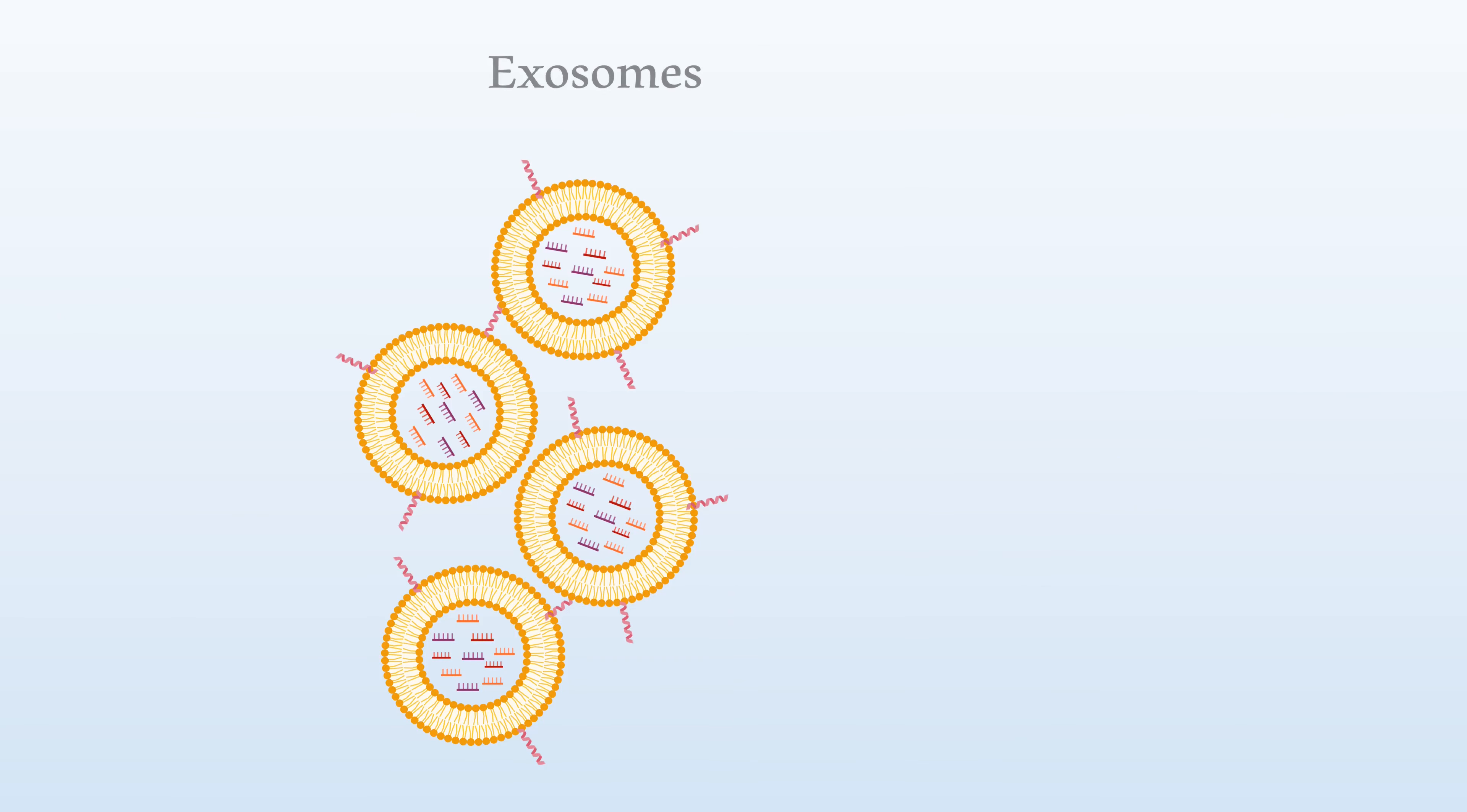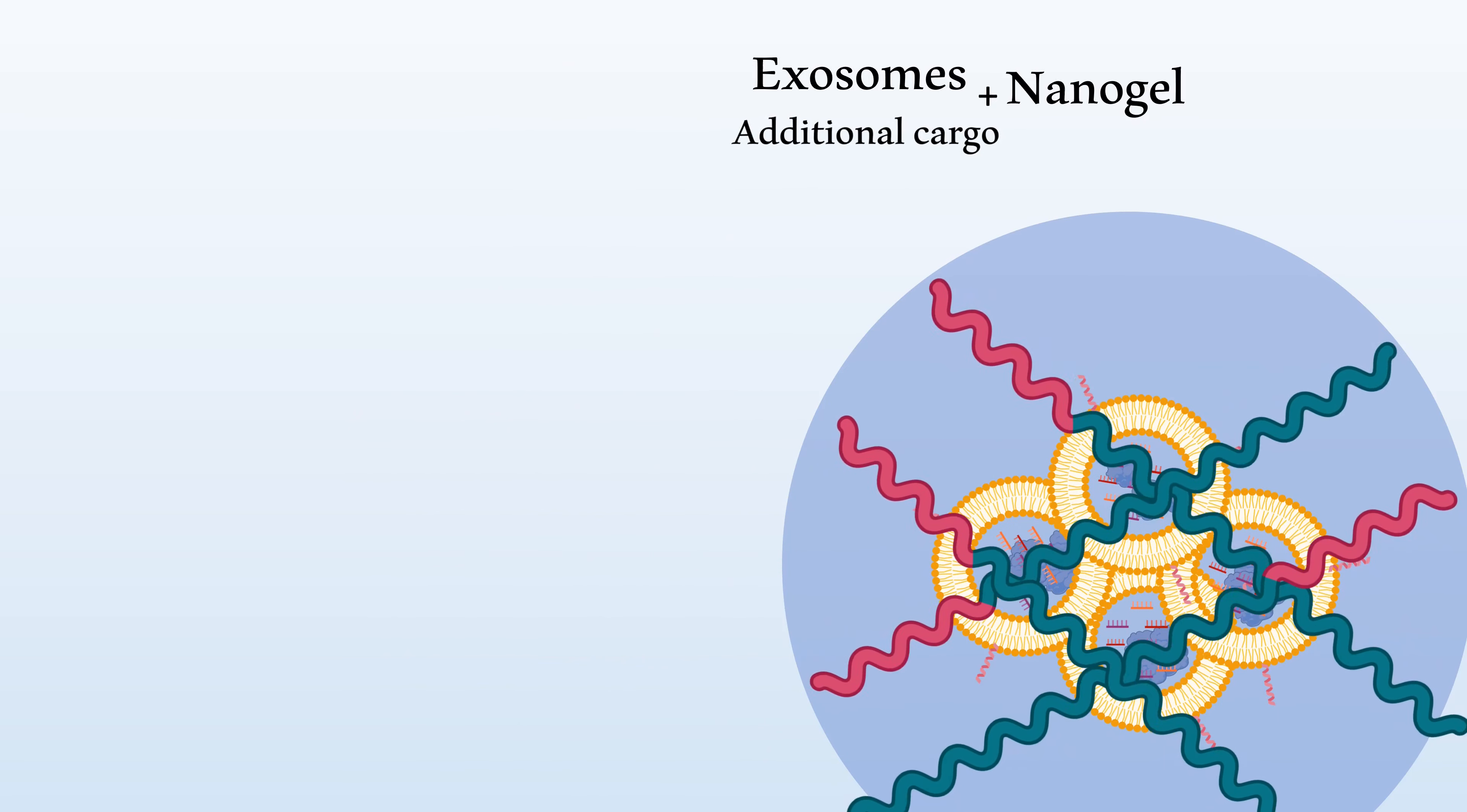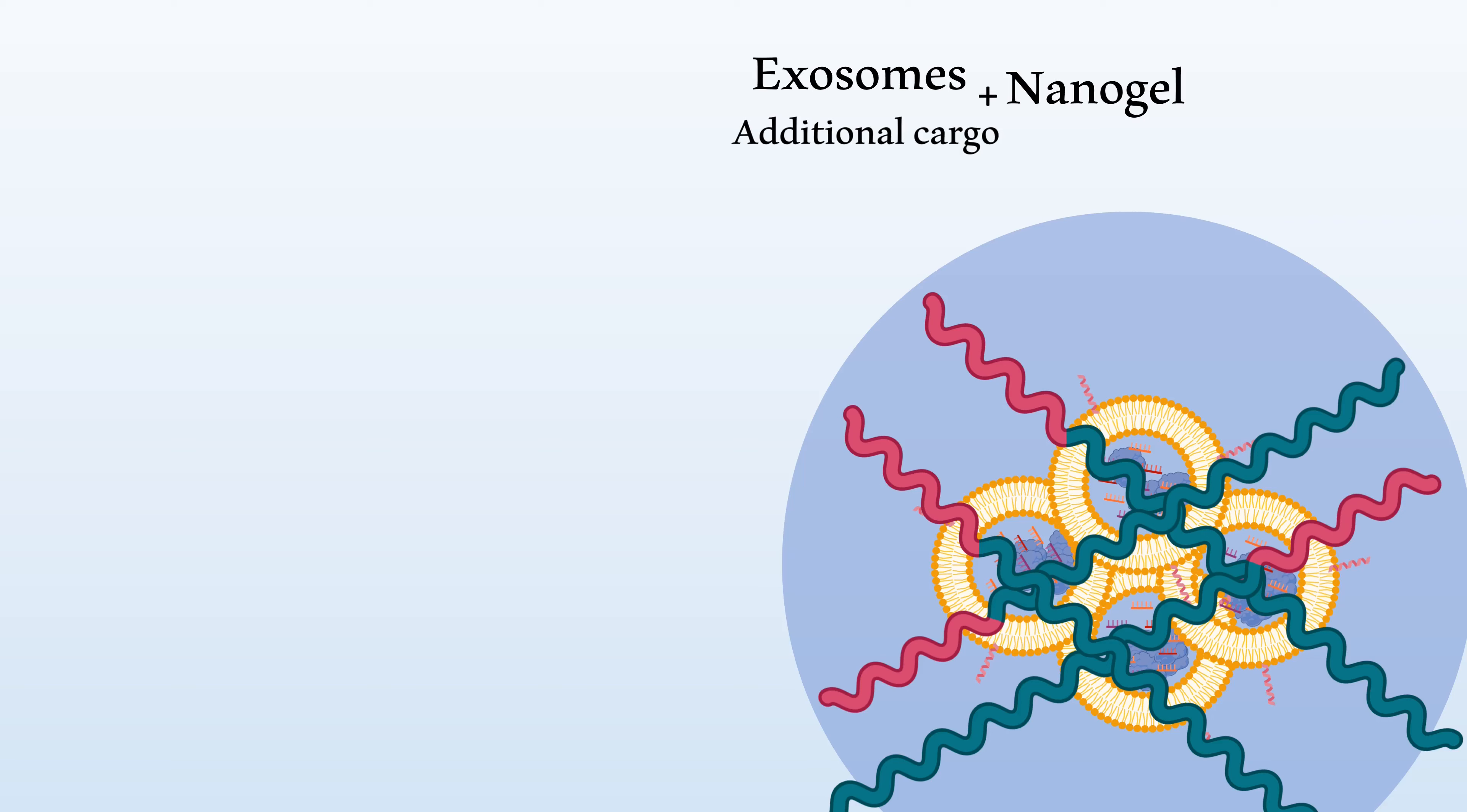Nanogels can even combine with other types of drug delivery systems, such as exosomes, which were described in a previous video. For example, an exosome containing helpful endogenous cargo could then be enhanced with additional cargo. Then, the nanogel could be loaded with the exosomes. One advantage to this system is to preserve the structure of the exosome.